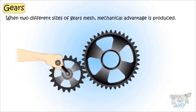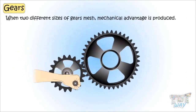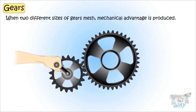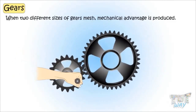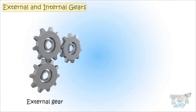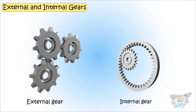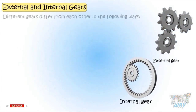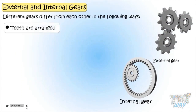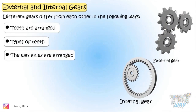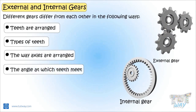When two different sizes of gears mesh, mechanical advantage is produced. Different gears differ from each other in the way teeth are arranged, their types of teeth, and the way axles are put together. Also, the angle at which teeth meet. Now let's learn each type of gear one by one.